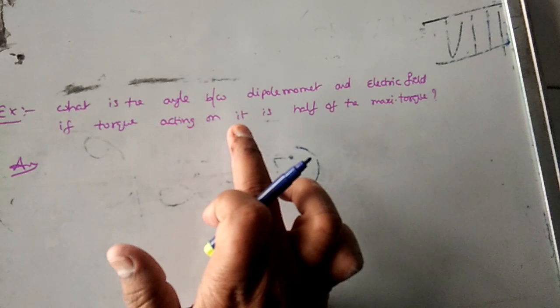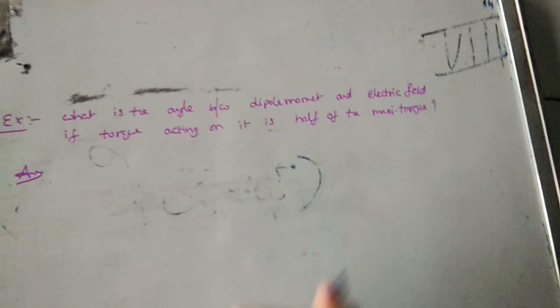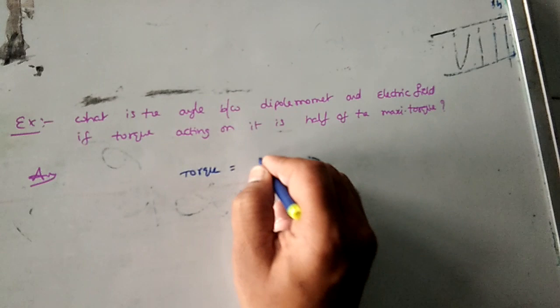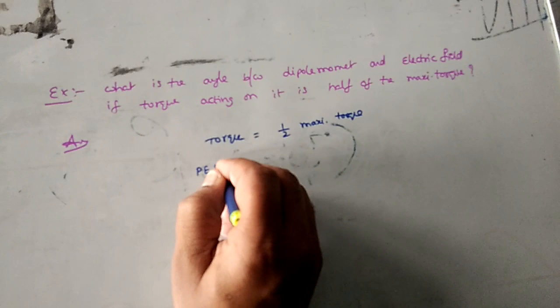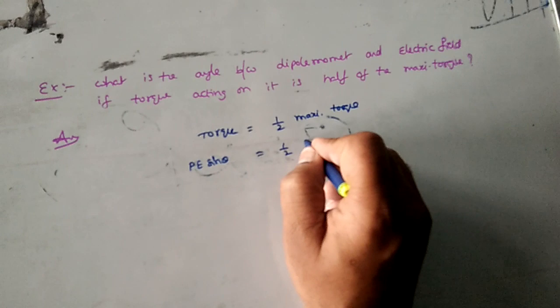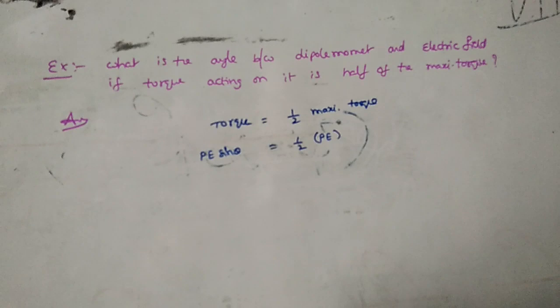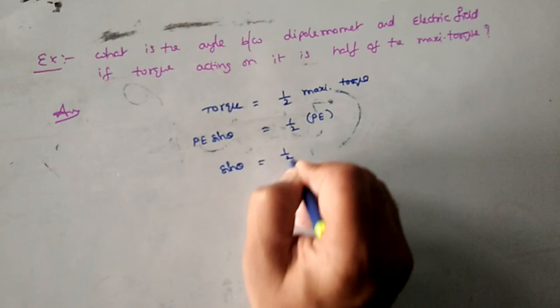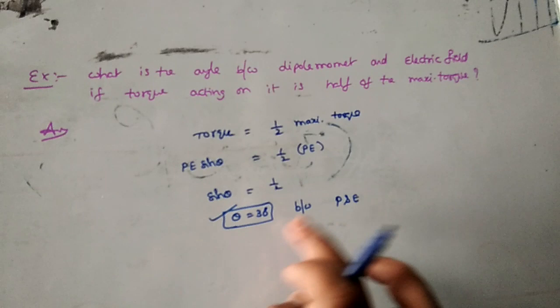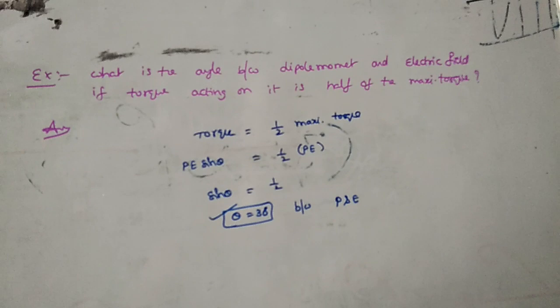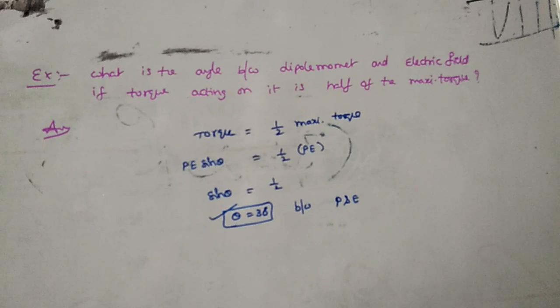Example: What is the angle between the dipole moment and the electric field if the torque acting on it is half of the maximum torque? Given: tau equals half of maximum torque. Using tau equals PE sin theta, and maximum torque equals PE, we get PE sin theta equals half of PE. Cancelling PE, sin theta equals 1/2, so theta equals 30 degrees. The angle between dipole moment P and electric field is 30 degrees.